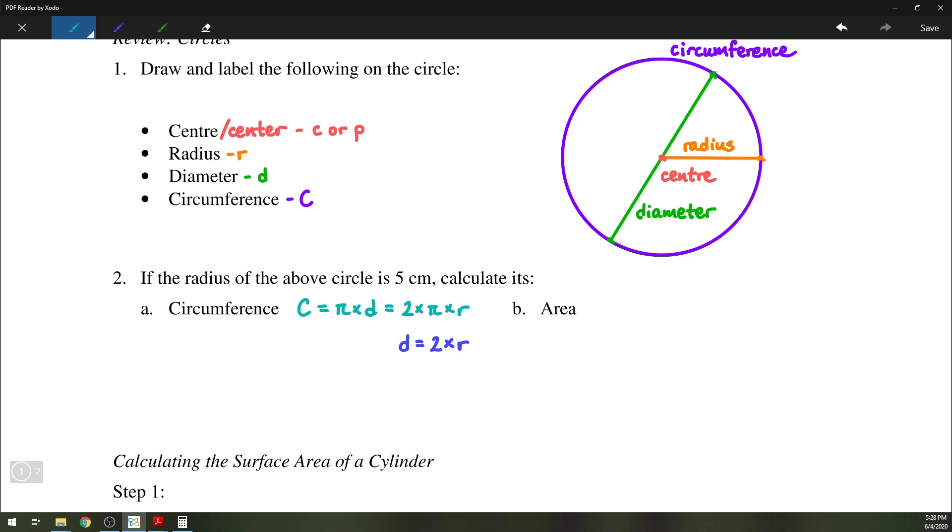On the other hand, for the area of a circle, we have A equals pi R squared.